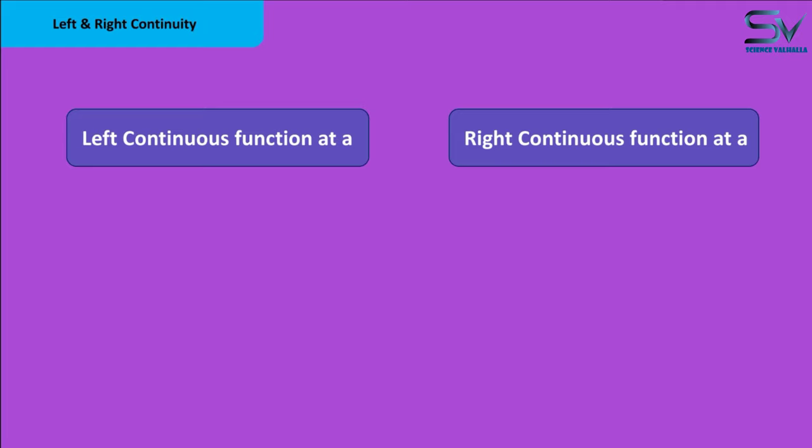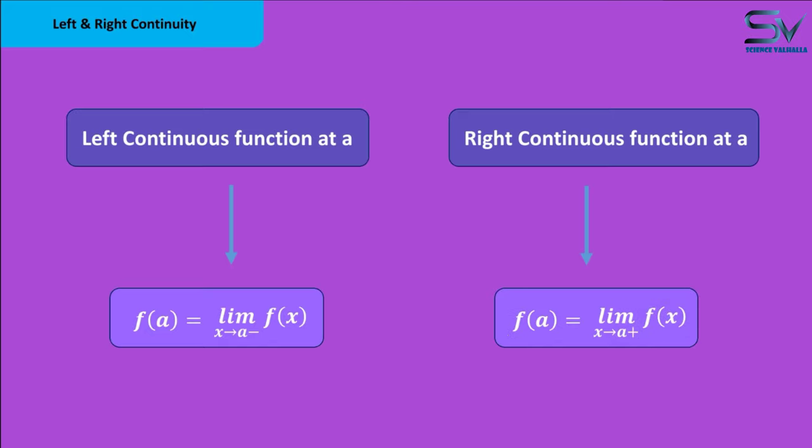Similarly, for a function to be left continuous at any point a, both its left limit and its value must be the same at this point. And for any function to be right continuous at any point a, both its right limit and its value must be the same at that point.